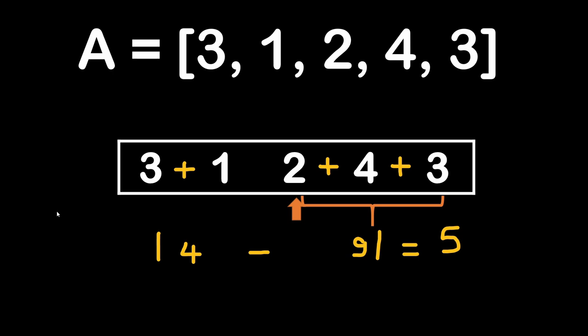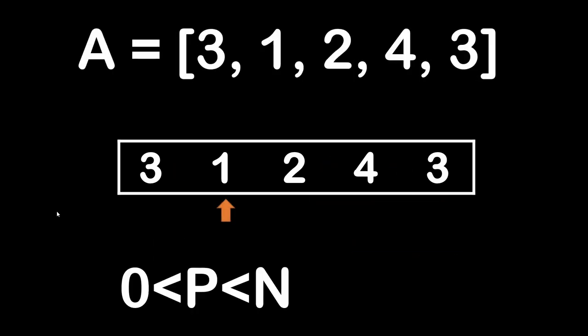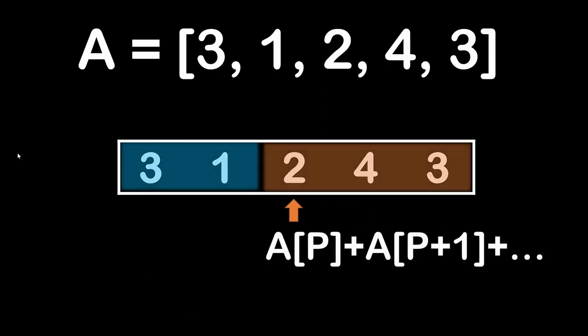The problem consists of moving the separating position from the second element to the right by increasing the position index, and for each position we calculate the absolute difference between the left sum SL and the right sum SR, in order to find the minimal value. One thing to be aware of is that the element pointed at by the separating position is included in the right sum. The first separating position is at the second element and it ends at the last element of the array, so we always have at least one element for the left sum and one for the right sum.